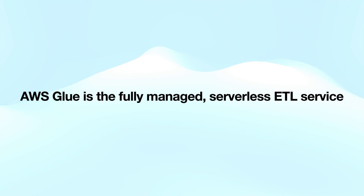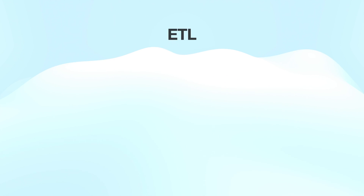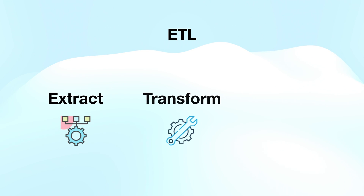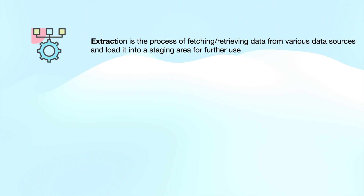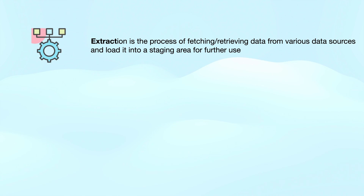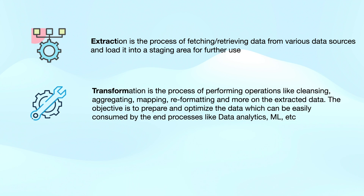AWS Glue is a fully managed serverless ETL service, and ETL stands for extract, transform and load. Extraction is the process of fetching data from different sources and loading the data into the staging area. Extraction happens first. Once the data is extracted, transformation takes place. Transformation is the process to perform different operations or apply functions to the extracted data, like reformatting, mapping, data cleaning and so on.